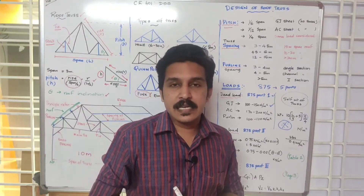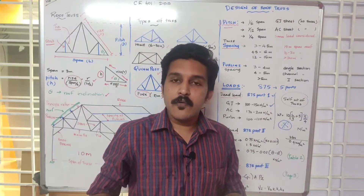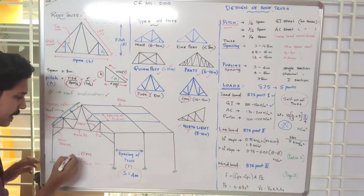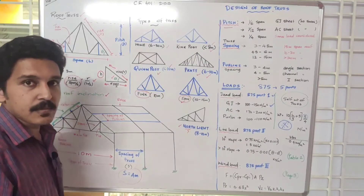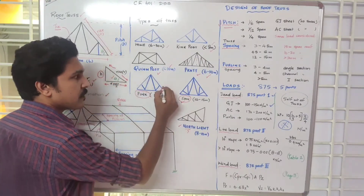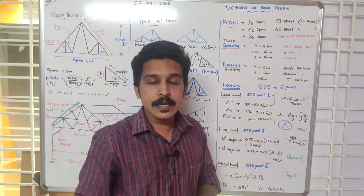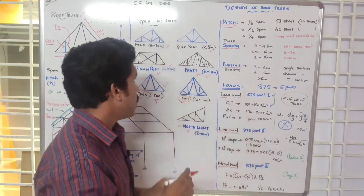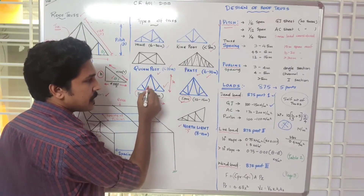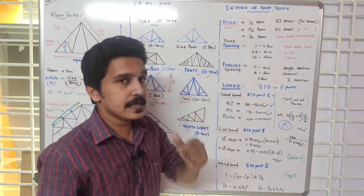For designing a truss, we need to decide what kind of truss to use and what span to design for. For a 10-meter span, a Fink-type truss is appropriate. We need to determine the pitch, height, and shape of the truss using the pitch equation. The type of roofing sheet — such as GI sheet — also influences the pitch selection.